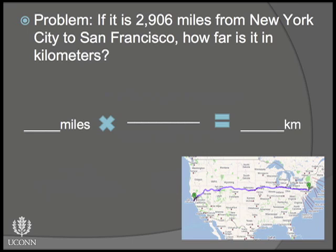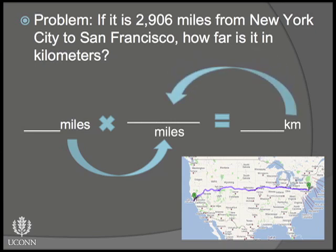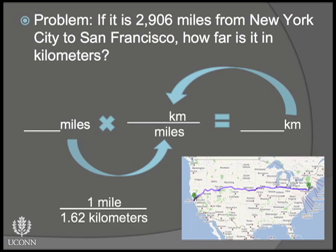The first step, which you should do without even thinking about, is to take the unit of the original item — in this case, miles — and place it on the bottom of the next conversion factor. Then ask yourself whether it is possible to directly relate the desired end unit to the unit on the bottom. Because we already know that we can relate miles to kilometers, the desired end unit can be placed on the top of the conversion factor. The placement of units is completely dictated by the problem itself — miles needed to be on the bottom, which meant that kilometers would move to the top.